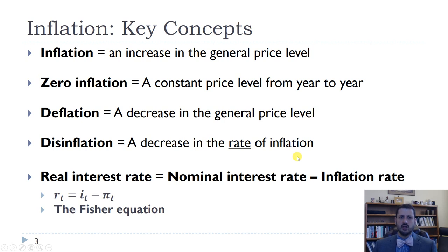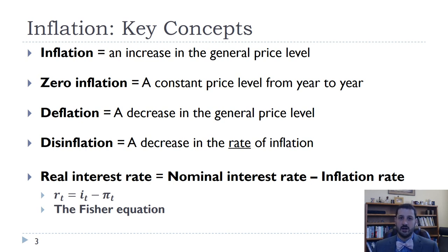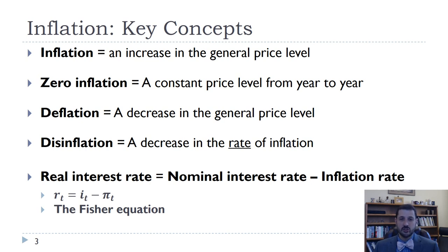A few important terms: inflation is an increase in the general price level. That general price level can be something like the consumer price index, which measures a basket of goods that a typical household would buy, or it could be the GDP deflator. The CPI is the most commonly used. Zero inflation means a constant price level from year to year, and sometimes people think that would be the optimal level of inflation, but we'll see that for a number of reasons that may not be the case.